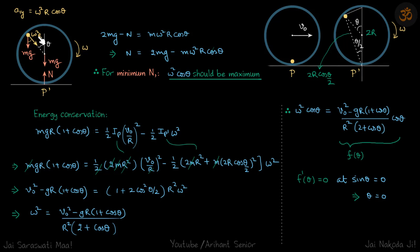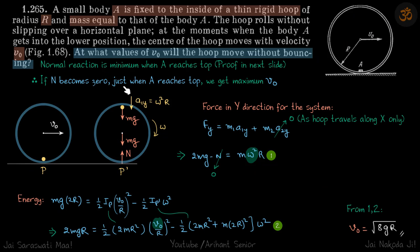The particle A accelerates toward the center by ω²r. This is with respect to the center of mass, plus the acceleration of the center of mass, which is in the x-direction and can be ignored. So the acceleration of the whole system in the y-direction is ω²r·cosθ.